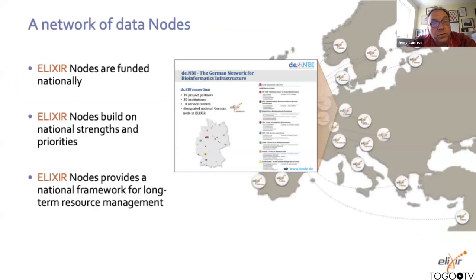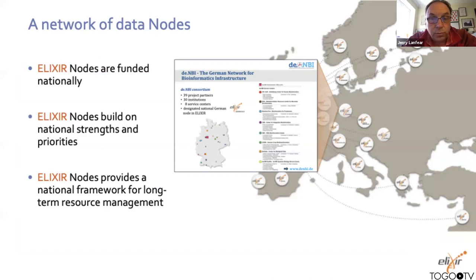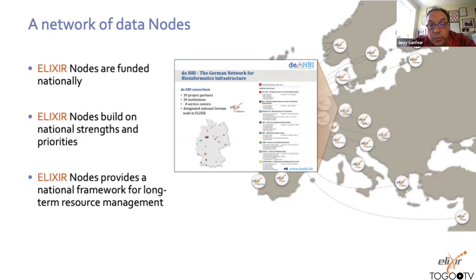ELIXIR nodes are funded nationally and typically build on national strengths. Different ELIXIR nodes tend to focus in different areas, whether it's human data, compute, or whatever it might be. The nodes provide a national framework for long-term resource management. One example is the German node, organised into something called DENBI — they have 39 project partners within the country, 30 institutions, and eight service centres, all part of the German node in ELIXIR.